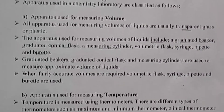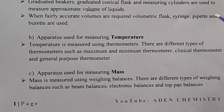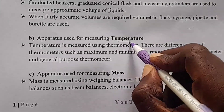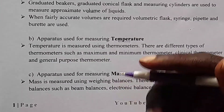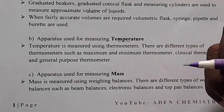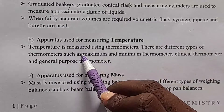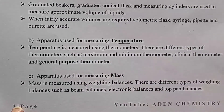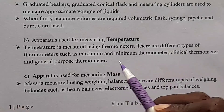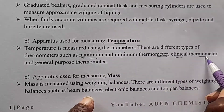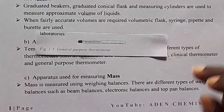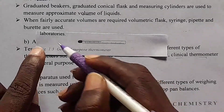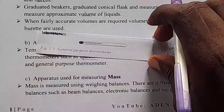Next, let us look at apparatus used for measuring temperature. These are used to measure temperature changes that occur when a certain reaction takes place. Temperature is measured using thermometers. There are different types of thermometers, such as the maximum and minimum thermometer, the clinical thermometer, and the general purpose thermometer. In the laboratory, we use the general purpose thermometer, which looks like this.